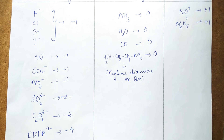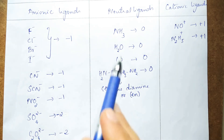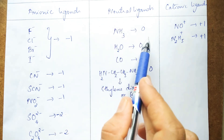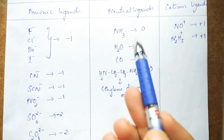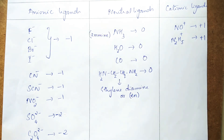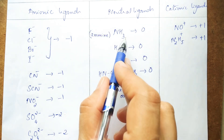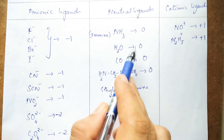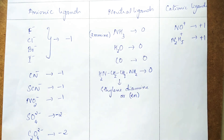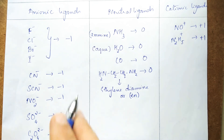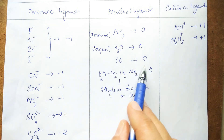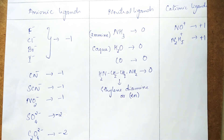Coming to neutral ligands: the first one is NH₃ (ammonia). We don't have any charge on this, so its charge is zero. In coordination chemistry you call it the amine ligand. The second one is water, H₂O — again a neutral ligand with zero charge, called the aqua ligand. Third is carbon monoxide, another neutral ligand, called the carbonyl ligand.